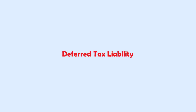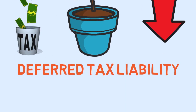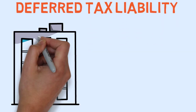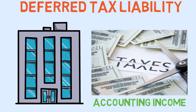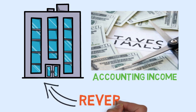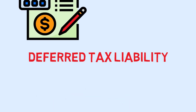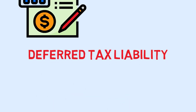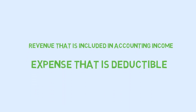Deferred Tax Liability: An item that causes taxable income in the current period to be lower than accounting income creates a deferred tax liability. Because taxable income is lower, the company does not pay as much in taxes as its accounting income indicates it should. However, the company knows these temporary timing differences will reverse and the tax not paid this year will need to be paid in the future, so for accounting purposes this difference is recorded as a deferred tax liability. It is created by either a revenue included in accounting income but not in taxable income, or an expense deductible for tax purposes but not an expense for book purposes in the current period.